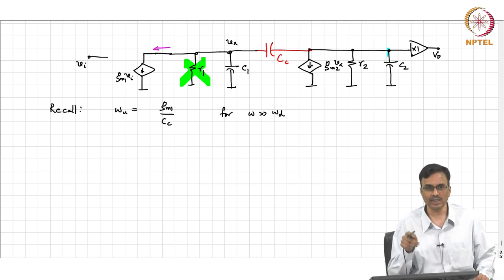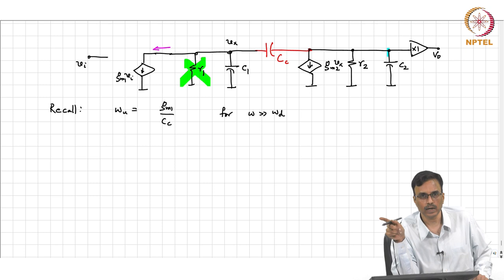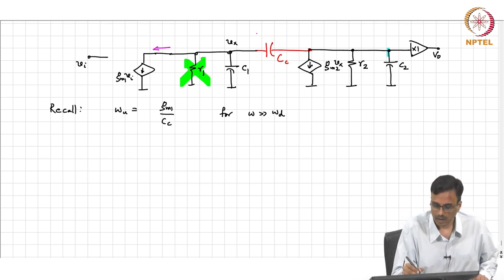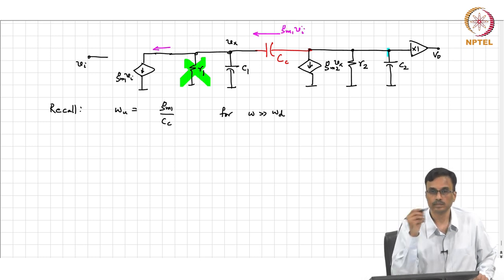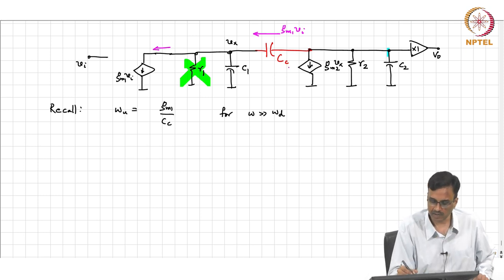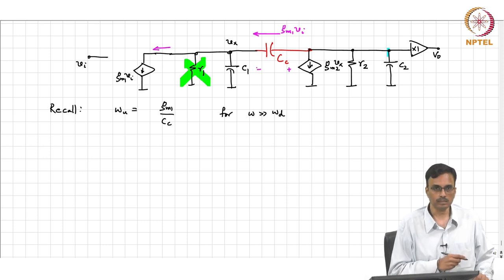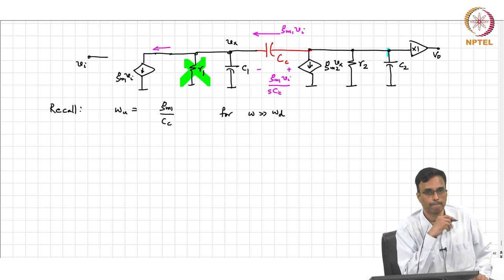The capacitance has got two parts: one is c1, the other one is the Miller-multiplied version of cc. So where is all that current flowing? Into cc. This current is approximately gm1·vi. So what is the voltage across cc? It is gm1·vi divided by s times cc.